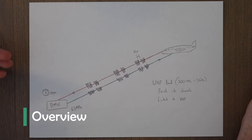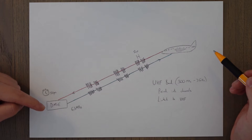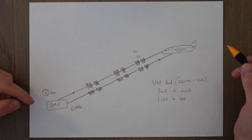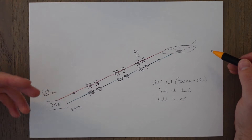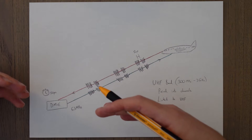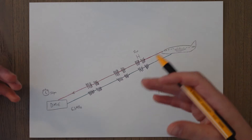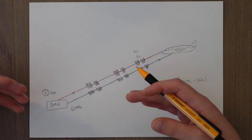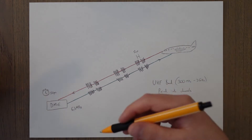Distance measuring equipment is a system used in aviation to determine the exact distance between an aircraft and a ground station. It relies on both equipment on the ground and in the airplane to function, which makes it a form of secondary radar. Primary radar is where there's only one bit of equipment that transmits and receives, like a bat using sonar for example, whereas secondary radar needs both the aircraft and the ground station to transmit and receive signals.